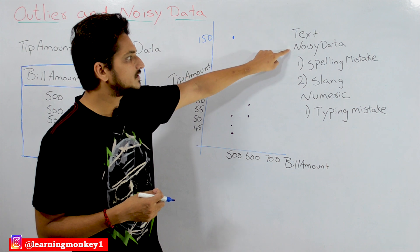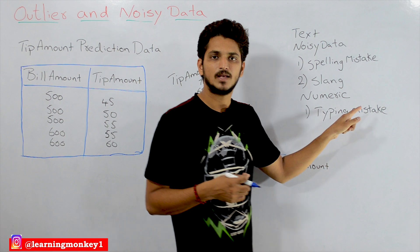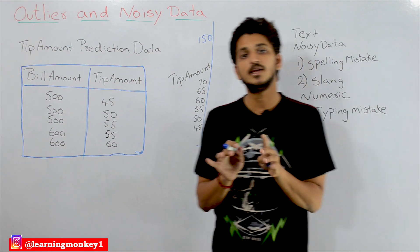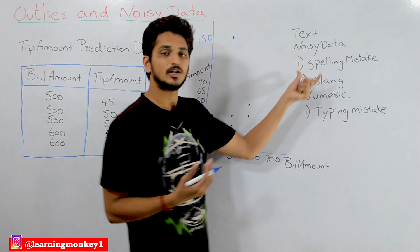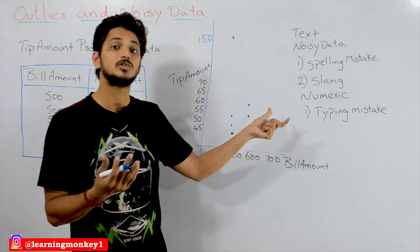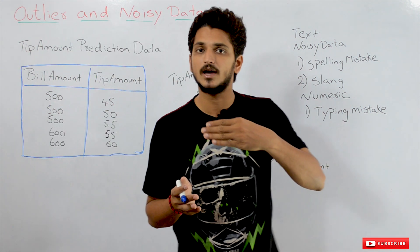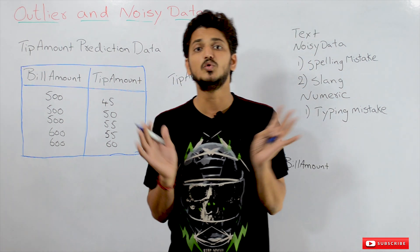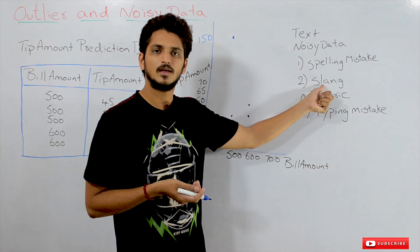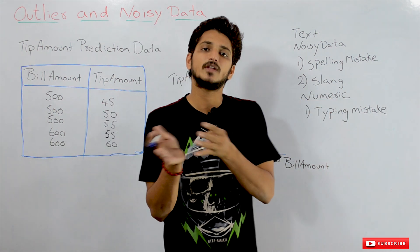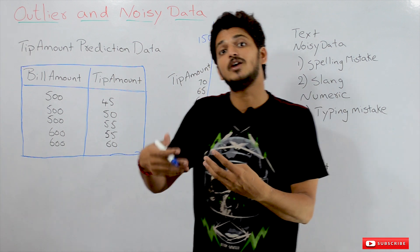In text data, noisy data means spelling mistakes and slang words. Maybe customers don't know how to write English and they give feedback. For example, in the Amazon mobile feedback dataset we discussed in a previous class, the first feedback said 'the mobile is like a doo-doo.' That's a slang word, and different slang words in different countries have different meanings. All this comes under text noisy data.